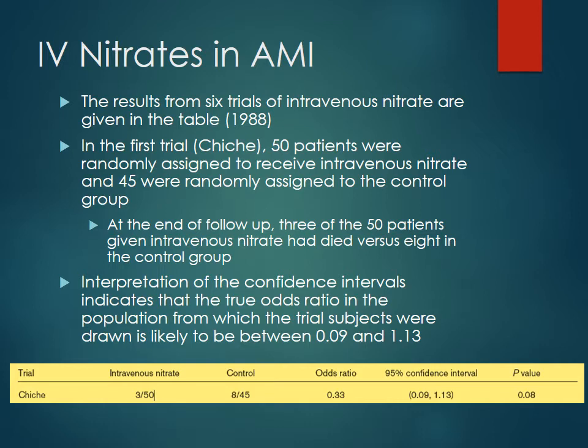At the end of the follow-up, they saw that in the intravenous nitrate group, three of the 50 patients had died versus eight in the control group. We're going to look at the odds ratio — basically the odds of an event happening versus it not happening. In the case of intravenous nitrates, the way you would calculate that would be to take three — the actual rate of the event, death occurring in this case — and divide that by 47, the number of cases where the event did not occur. The same thing for the control group, and then you divide that out to get the odds ratio.